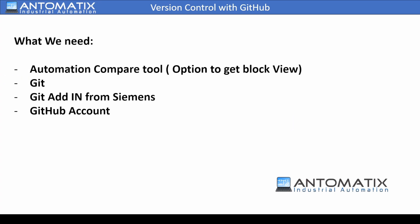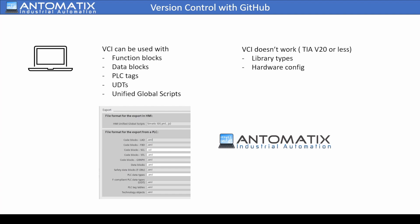Apart from TIA Portal, we need the automation compare tool with the option to get block view, Git open source version control, the Git add-in from Siemens, and a GitHub account. Although all software is free, there are some limitations — currently we cannot use it for library types and hardware.